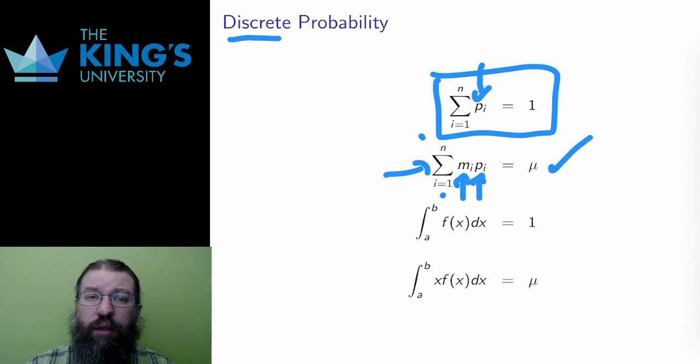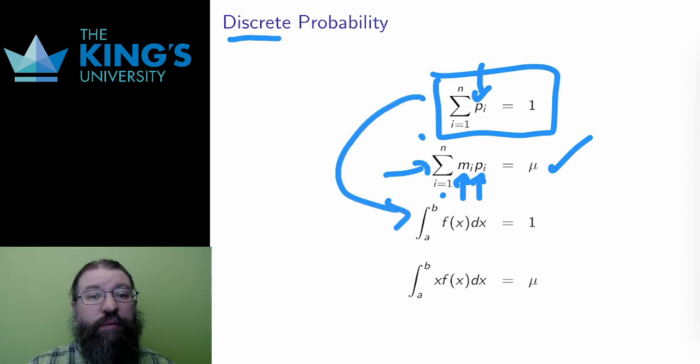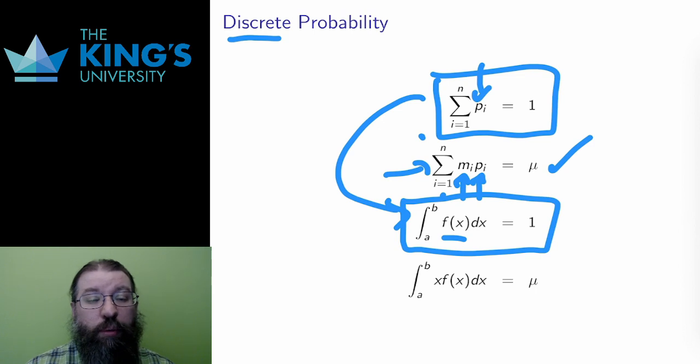In parallel, for continuous probability, instead of some measurements m_i, I have a variable x in a range from a to b. And instead of having a probability p_i for each measurement m_i, I have a function, a probability distribution f(x), which measures the probability of the measurement x. Instead of having all the probabilities add to 1, the equivalent condition for a probability distribution is that the integral over the domain must be 1, which says the same thing that the total probability is 1.